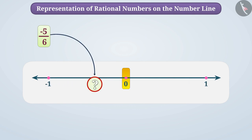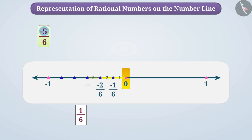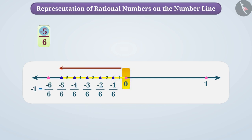To find the exact location of minus 5 by 6, we will divide the distance between 0 and minus 1 into 6 equal parts. In this way, the distance between any two consecutive parts of these 6 parts will be 1 by 6. The fraction of the rational number minus 5 by 6 tells us that we have to take 5 parts of 1 by 6 distance to the left of 0. This will give us the exact location of minus 5 by 6.